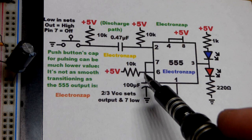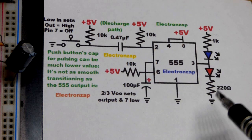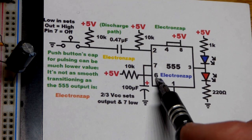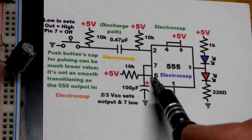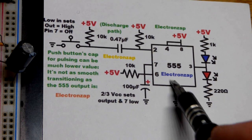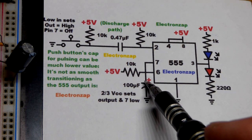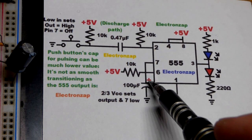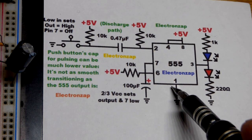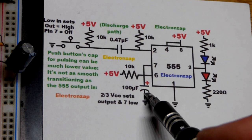This results in the capacitor starting to charge through that 10k resistor. At the same time the output goes high. Once it gets to two thirds of the supply voltage, pin 6 senses that, then pin 7 connects to ground as does the output. The output goes low and the capacitor instantly discharges since we don't have any resistance.